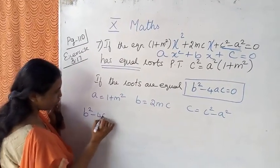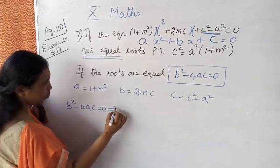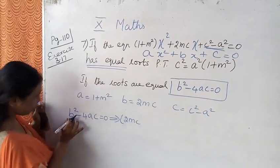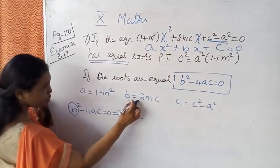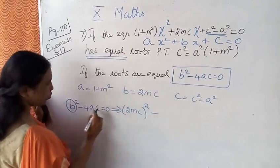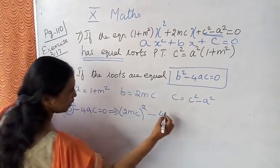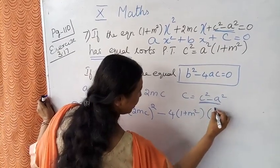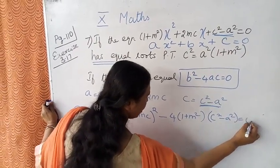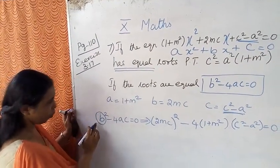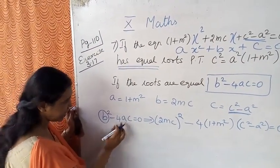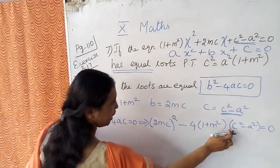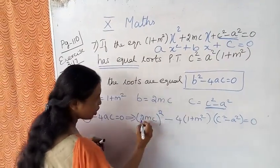b square minus 4ac equal to 0. In place, B is 2mc, so 2mc whole square minus 4, A is 1 plus m square, C is c square minus a square, equal to 0.